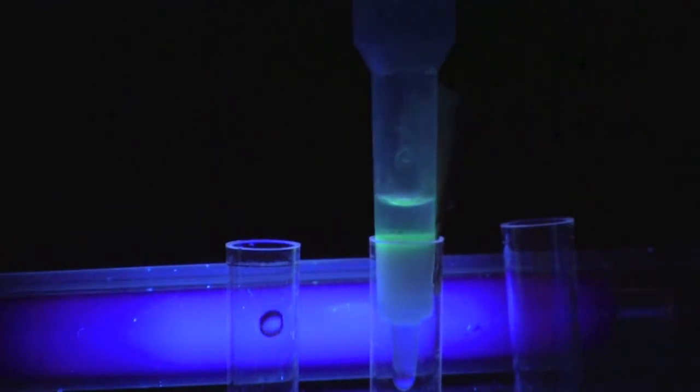Allow the buffer to drain until the bottom of the meniscus is 1 to 2 millimeters from the surface of the resin. Transfer the column to collection tube number 3.